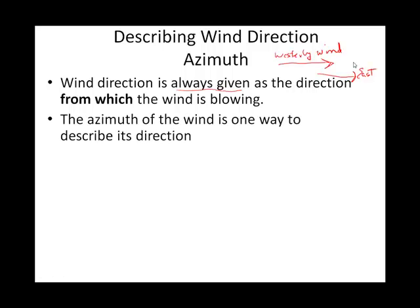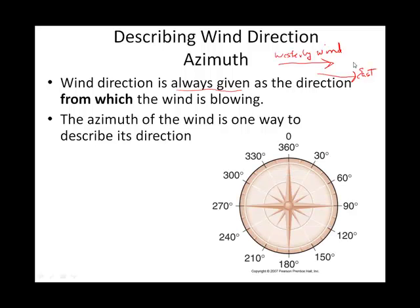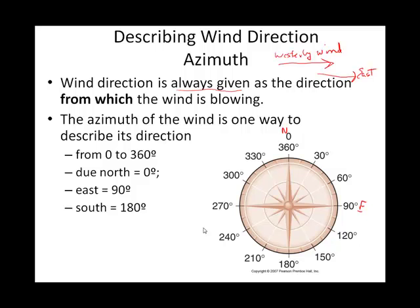So a few ways to describe wind direction. One of them is in terms of degrees. The way this works is due north is zero degrees, due east is 90 degrees, south is 180 degrees, and west is 270 degrees. That's one way to do it.